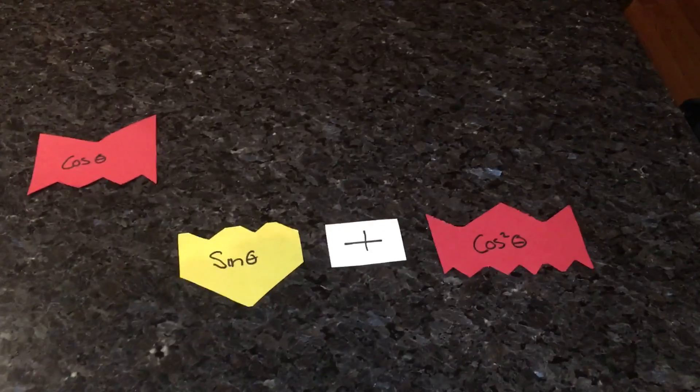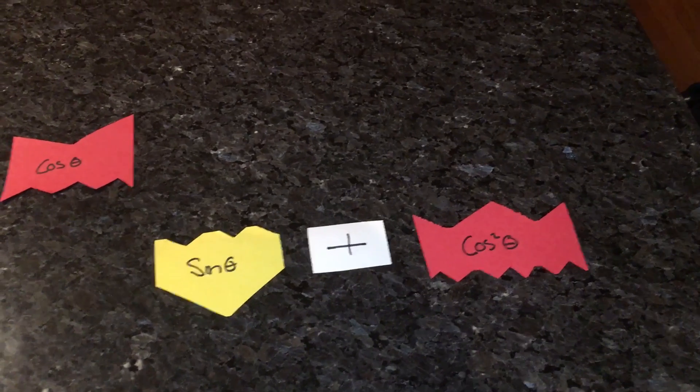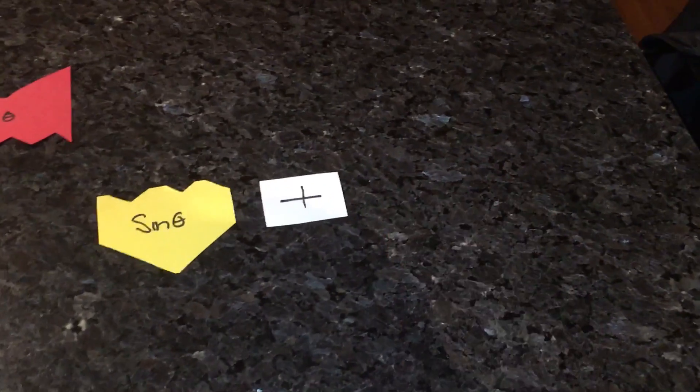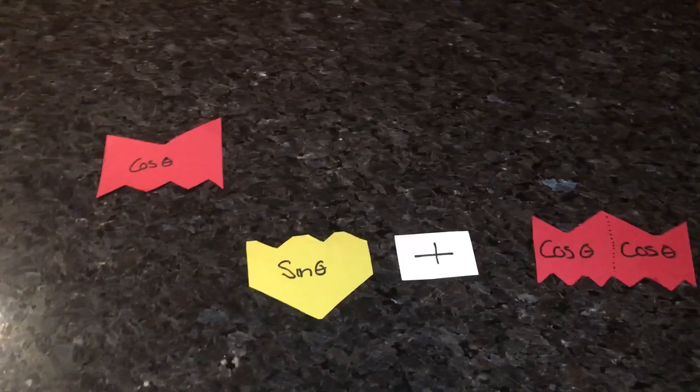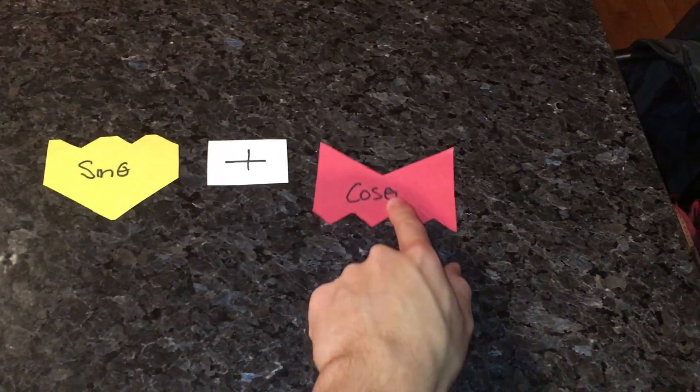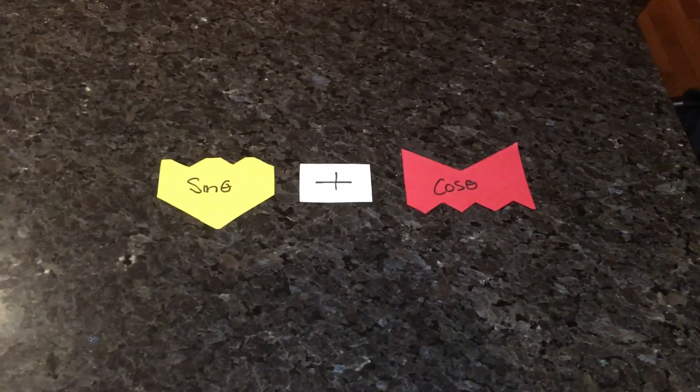So we have cosine theta and cosine squared theta. As you can see right here, two cosines and one cosine. We can cancel this one and cancel one of these, making it cosine theta. And here we have our final answer: sine plus cosine.